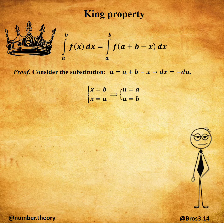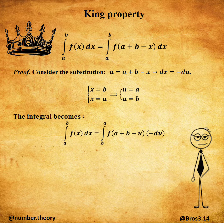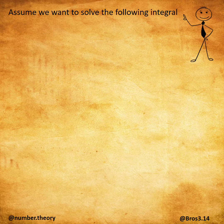To prove the King's Rule property, you can use a substitution as follows. The integral becomes — and hence this proves the King's Rule property.